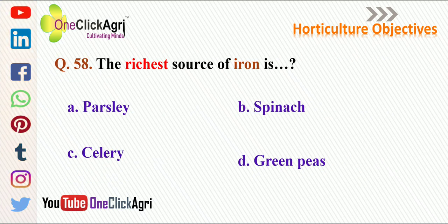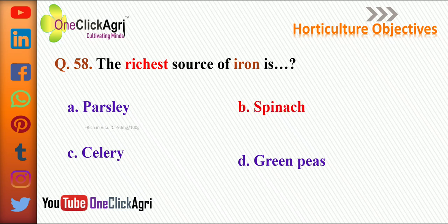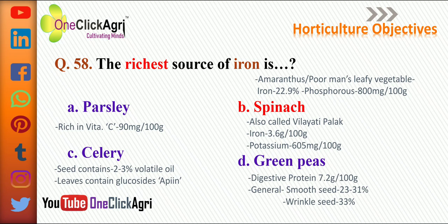The richest source of iron, based on the given options, is spinach, also called Vilaiti Palak. It contains iron 3.6 g per 100 g and potassium 605 mg per 100 g. However, in Amaranthus, also called the poor man's leafy vegetable, iron content is 22.9%, the highest among vegetables. It also contains phosphorus 800 mg per 100 g. In parsley, it is rich in vitamin C containing 90 mg per 100 g. Celery seed contains 2–3% volatile oil and its leaves contain a glucoside called apiin.